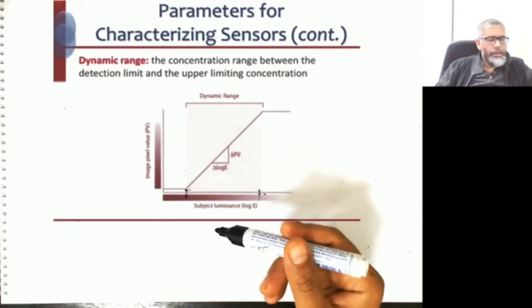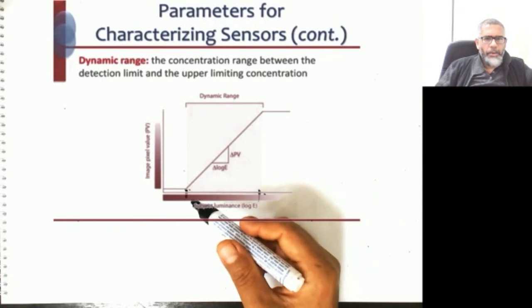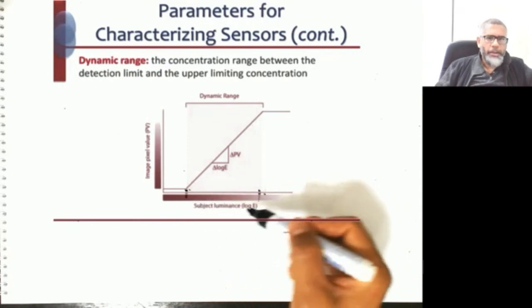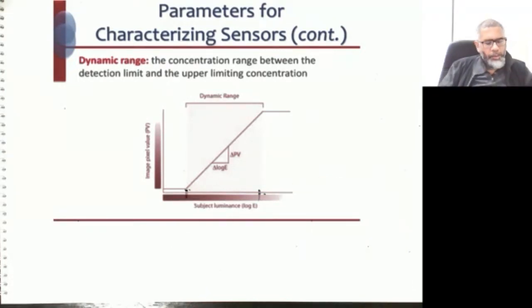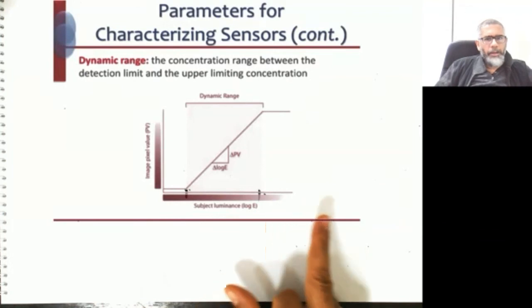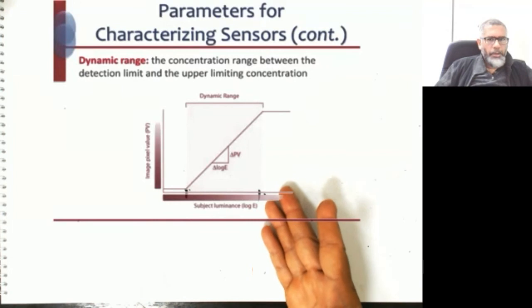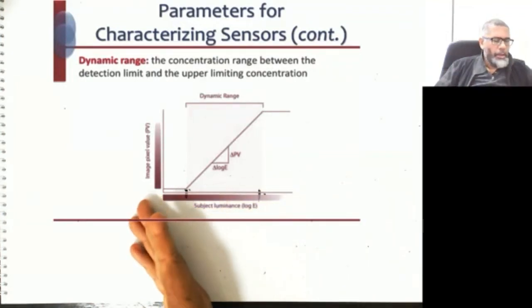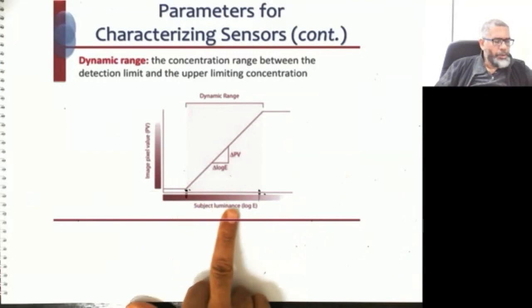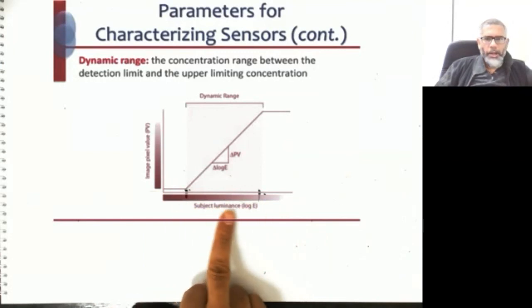In Turkish: the dynamic range refers to the range between the minimum and maximum values your sensor can measure. Outside this range, the information from your sensor may not accurately reflect changes in the environment, meaning your sensor is not functioning properly beyond these limits.